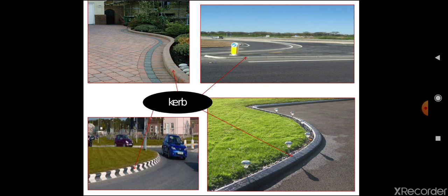In this slide we can see different types of curbs. Here you can see a low or mountable curb — the vehicle moving on the pavement can enter the area with small difficulty. Here is a semi-barrier curb, and here is a barrier curb where the vehicle is discouraged from entering. In the case of the mountable and semi-barrier curbs, the vehicle can leave the pavement and climb the curb with some difficulty.